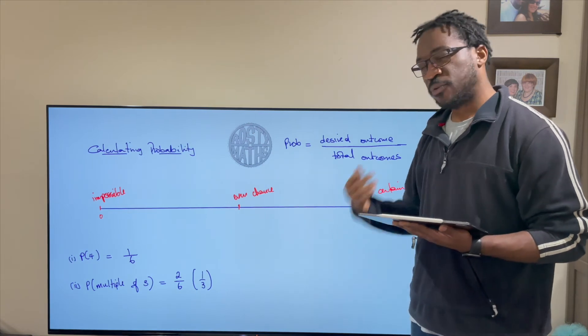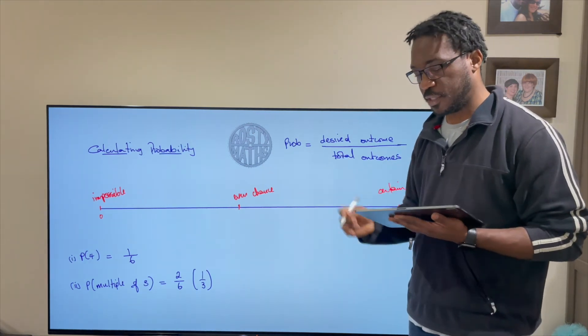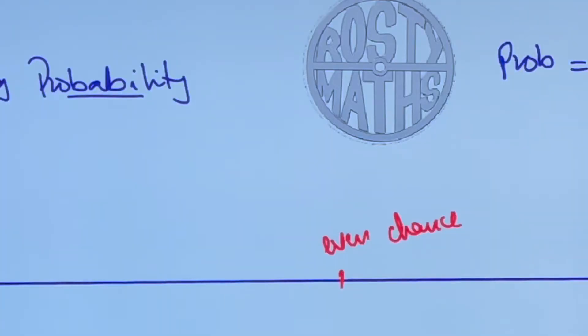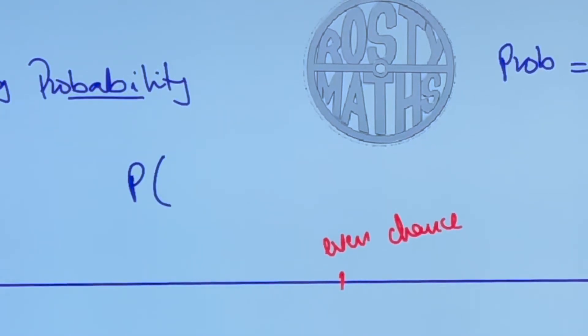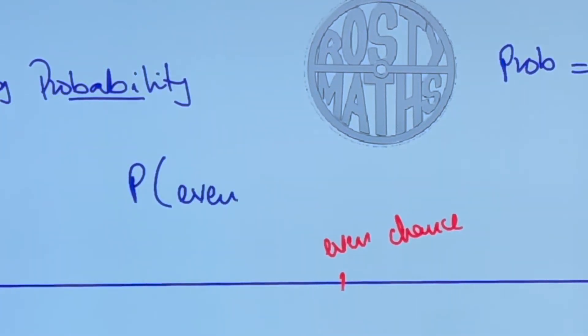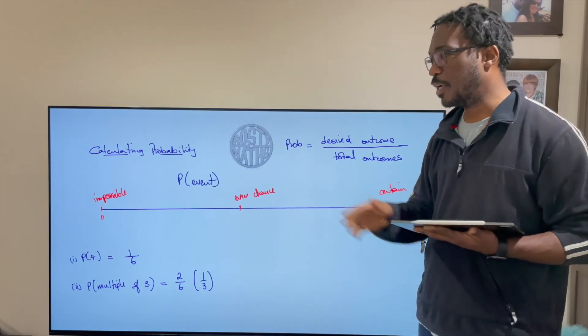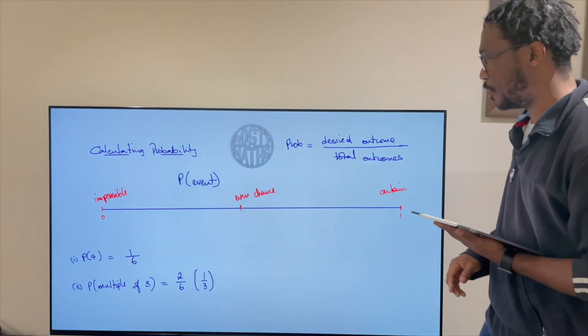Now I forgot to mention at the beginning of the video that when you see probability in the real world, in the wild as we say, it will have a P next to it. So they're going to say a P and in bracket they're going to tell you what the event is or what it is that they want you to find a probability of. So look out for that really super important.